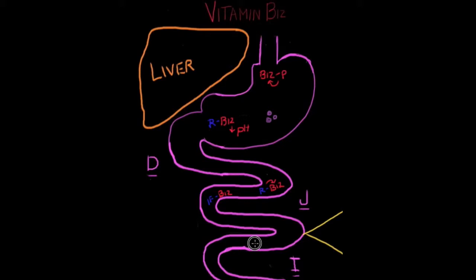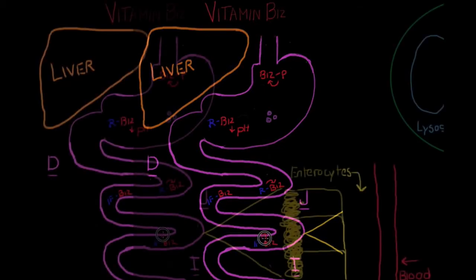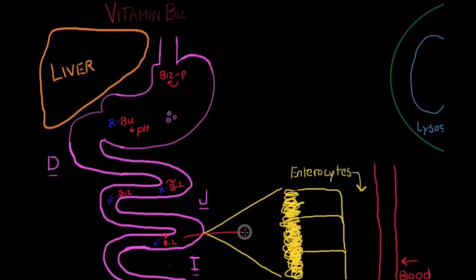The intrinsic factor complex then travels to the ileum, where it is absorbed at the brush border and is released from the intrinsic factor. You can see here in the yellow a close-up view of the lining of the ileum, focusing on the brush border where we have enterocytes.